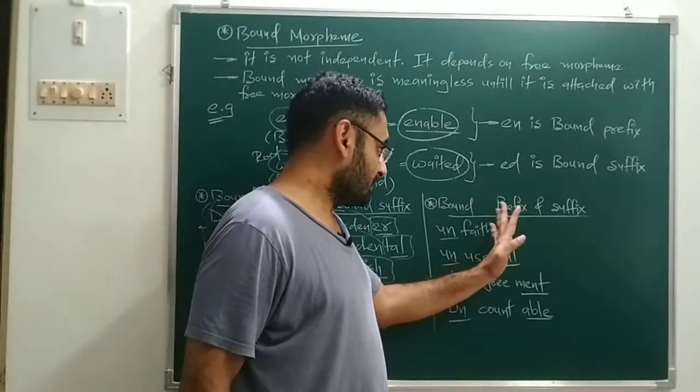Now we will discuss free morphemes. For free morphemes, two things to remember: first, a free morpheme occurs alone — it is a single thing which comes alone. That means it does not depend on another word — it has its complete meaning and is independent.